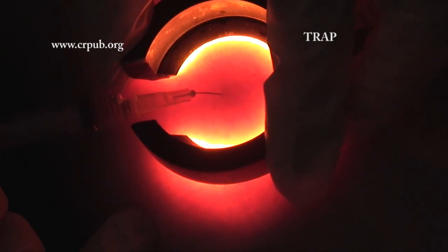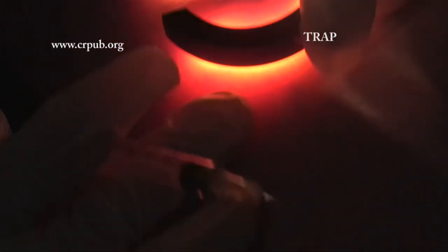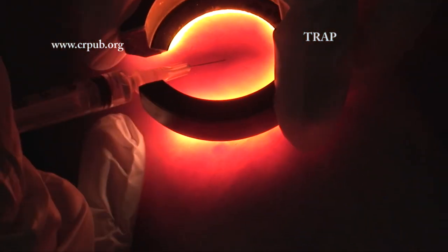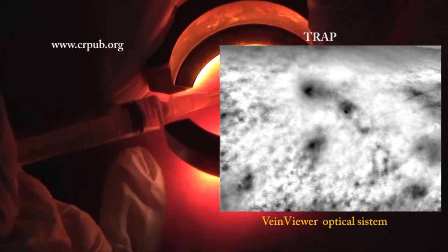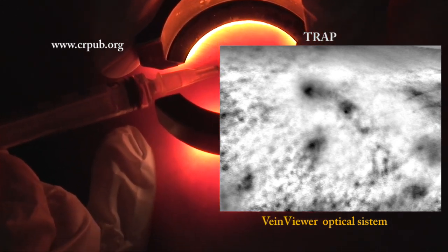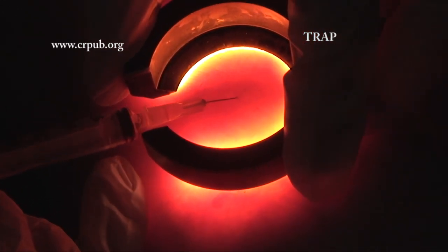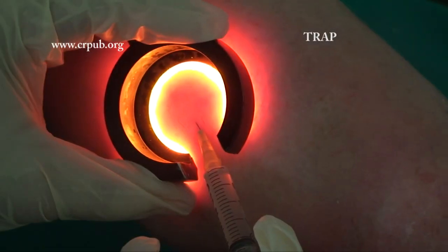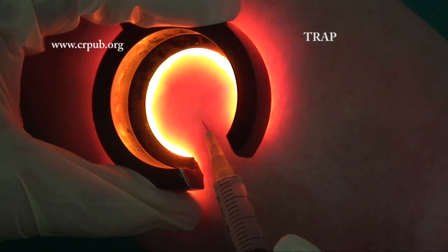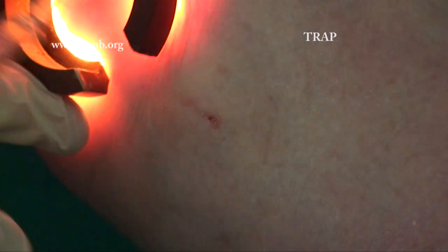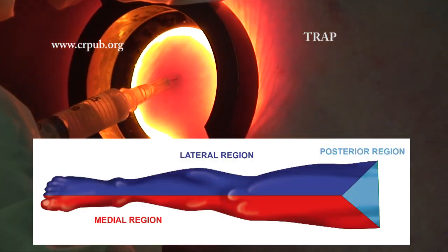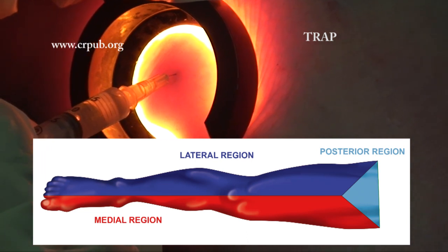TRAP begins, as always, from the most dependent areas of the limb. Transillumination, together with the new infrared optical systems, enables the veins to be visualized despite the skin dystrophy that is typical of these patients. All of the visible veins are injected with a quantity of solution sufficient to reach the perforating veins. All three regions of the limb are injected: medial, posterior, and lateral.